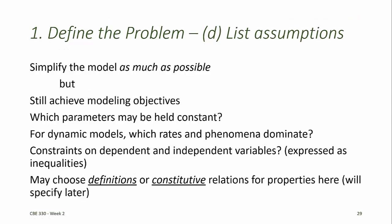The final step in the problem definition is usually to list assumptions. Assumptions serve several purposes in mathematical modeling. They help us to simplify a model as much as possible. But when listing assumptions, we should assure ourselves that the assumptions we've listed enable us to still achieve the model objective, which we defined in step 1a. Are there parameters that can be held constant? For dynamic models, which rates and phenomena dominate? And can we neglect processes that occur at much faster or much slower rates? Are there constraints on dependent or independent variables? Often these will be expressed as inequalities.